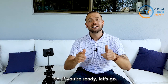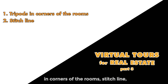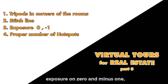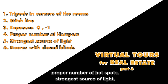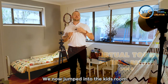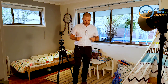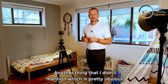In this part I'm going to talk about tripods in corners of the rooms, stitch line, exposure on zero and minus one, proper number of hotspots, strongest source of light, rooms with closed blinds, and the main point of view.